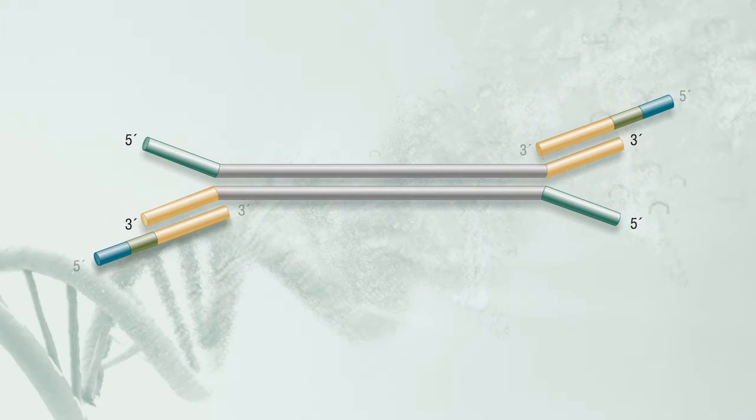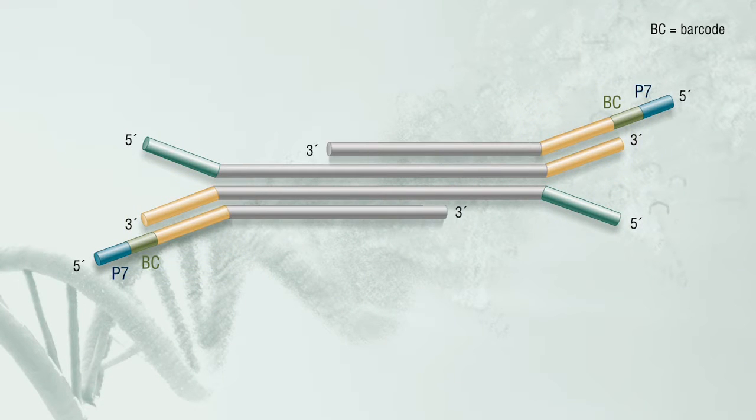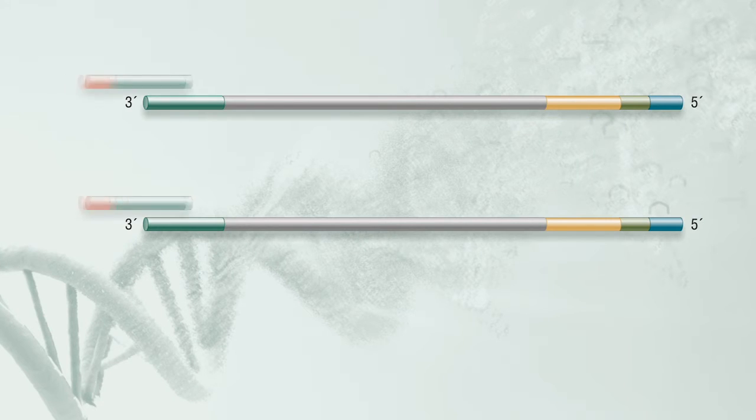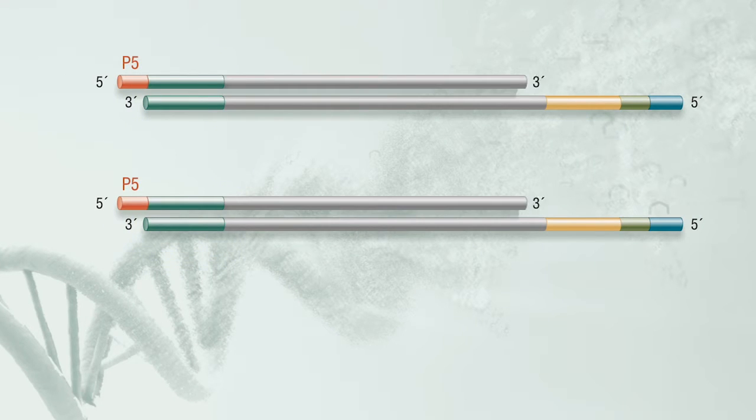The final step of library preparation is library amplification by PCR. This step not only increases the amount of library but also selects for molecules that have an adapter ligated to each end.